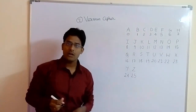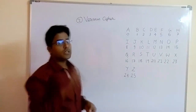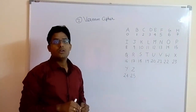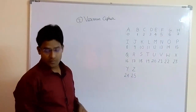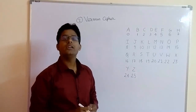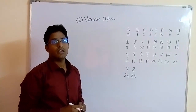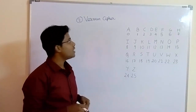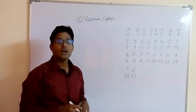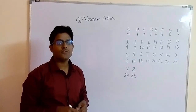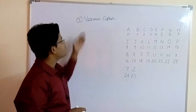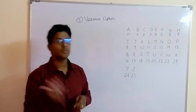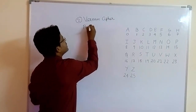Now, as from the first video, you know that in Caesar cipher, to do encryption we need plaintext, we need a key, and we get ciphertext using this plaintext and key. In the first video I explained why we need ciphertext and why we need to convert plaintext into ciphertext. So in this video let's see how plaintext gets converted into ciphertext using the Vernam cipher method.